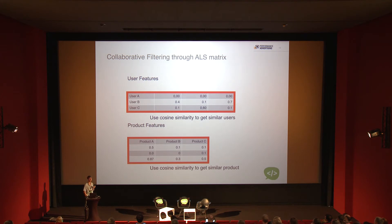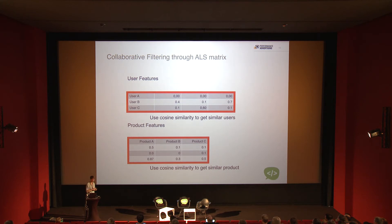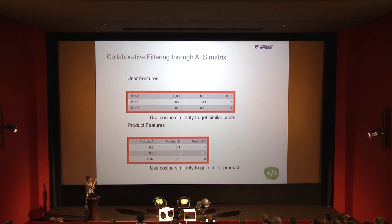Now, how do I get from having user A to recommending products for that user? For user B, you take the user features, rotate them 90 degrees, and calculate cosine similarity against products A, B and C. This gives you the best-matched products. Because the numbers are symmetrical, you can just use them against each other to get the cosine similarity and find which products are most suited for that user.